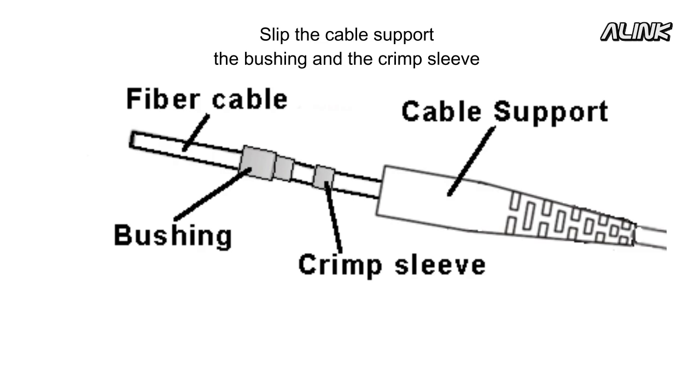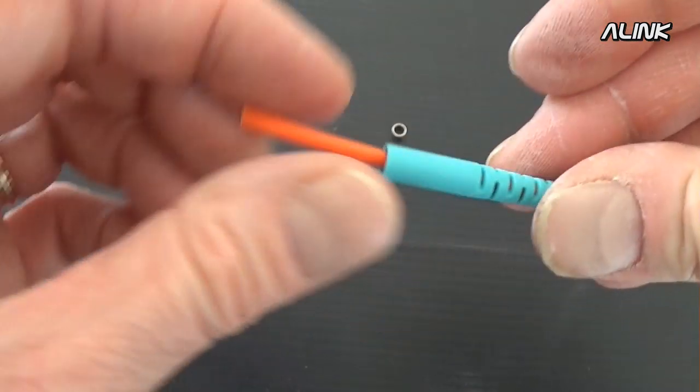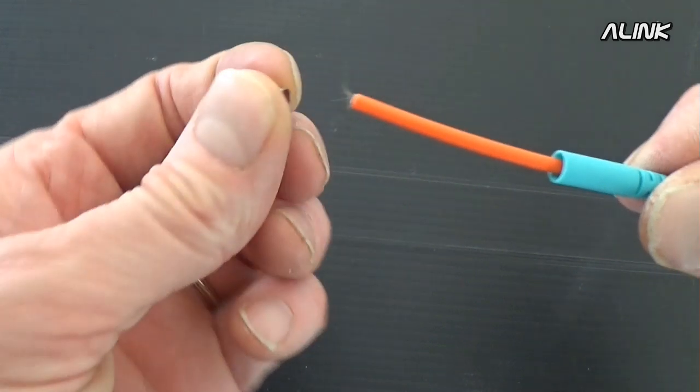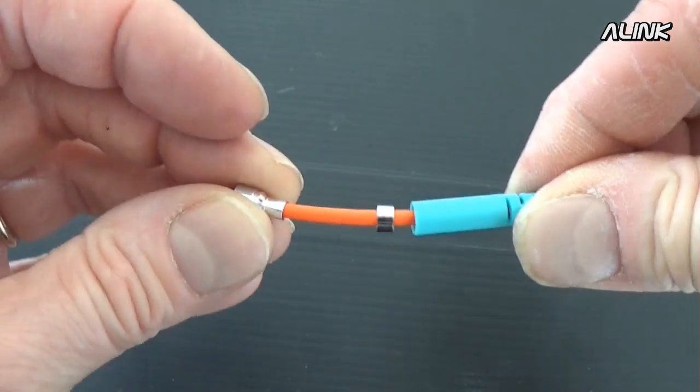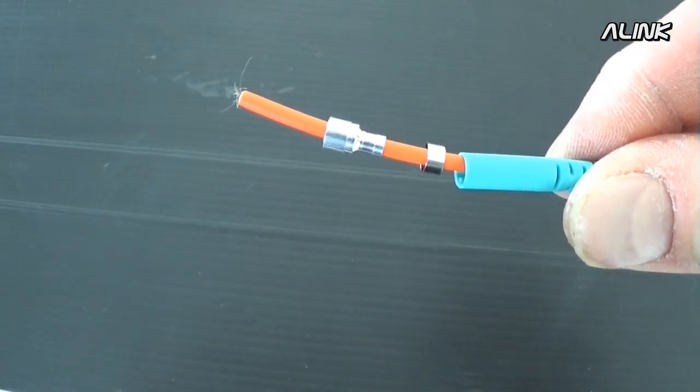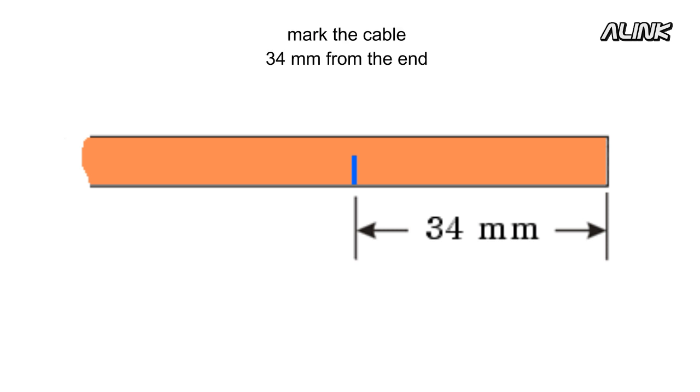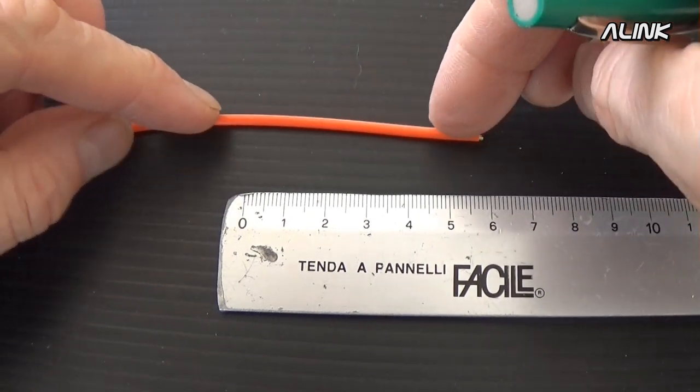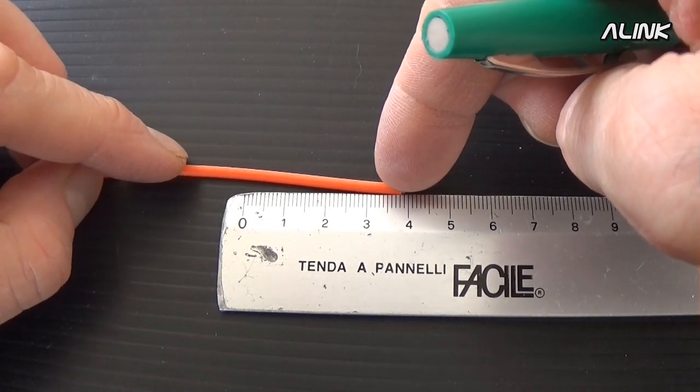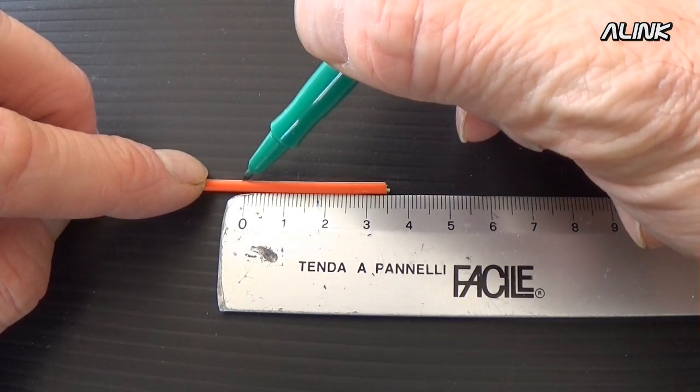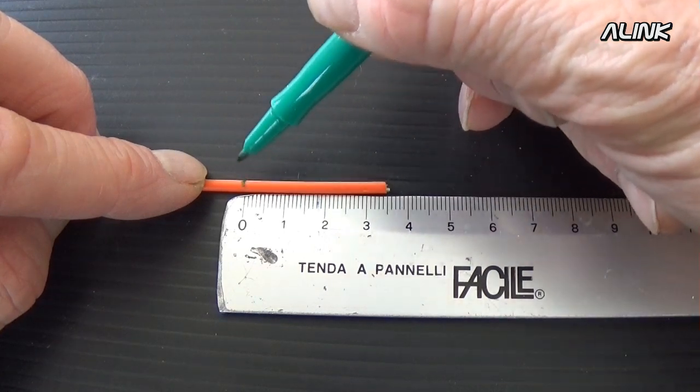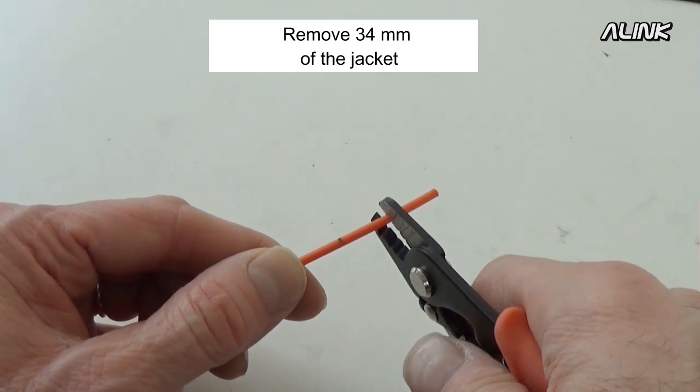Slip the cable support, the bushing, and the crimp sleeve onto the fiber cable. If you are terminating a 3mm cable, mark the cable 34mm from the end.